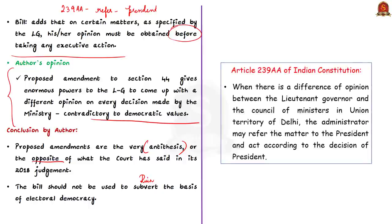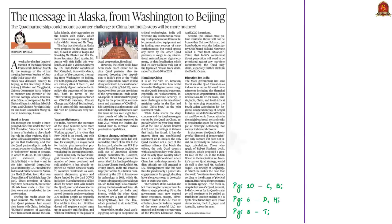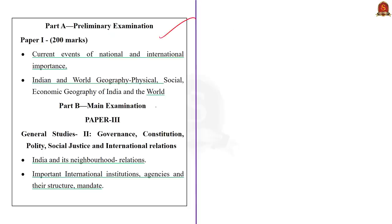A few days ago, the Quad virtual summit happened at the highest political levels, and almost a week later the US and China held their highest in-person engagement under the new Biden administration, meeting in Alaska. Today's discussion focuses on the lacunas in the Quad that can prove disadvantageous for India and the reason why India should tread carefully. As a quick recap, Quad is a coalition of four maritime democracies of the Indo-Pacific — India, US, Japan, and Australia.